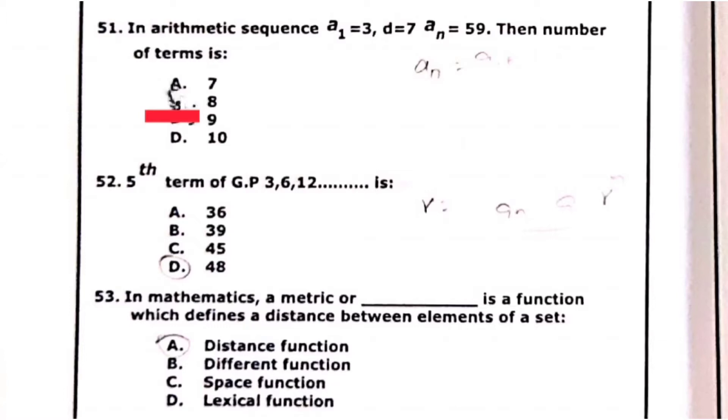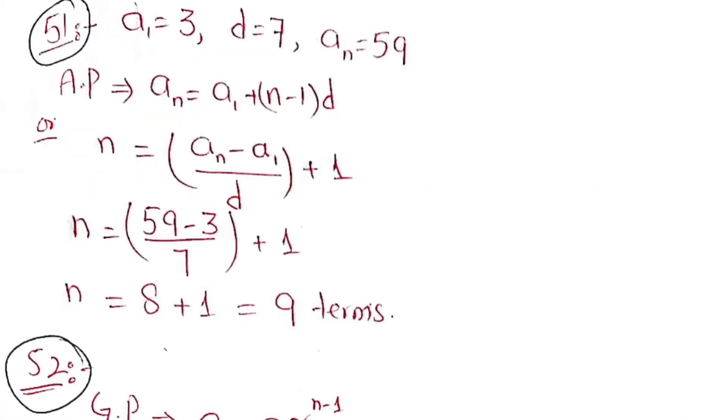Now we check their solution. Question 59: arithmetic sequence or arithmetic progression can be written in general as AN equals A1 plus N minus 1 times D. We have to find the total number of terms. So it means we have to find N. Basically N will become 9.